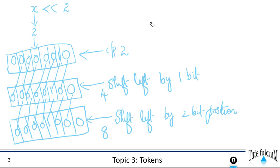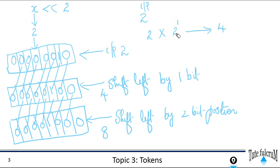Left shift operation is equivalent to multiplying the operand by two. Our input was two; when shifted by one bit position, the output was four — that is two multiplied by two to the power of one. Shifting two towards the left by two bit positions multiplies by two to the power of two, giving eight. Left shifting is equivalent to multiplying the data by two to the power of the number of bit positions shifted.